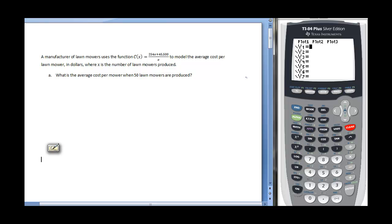This is an application problem using rational functions. Let's figure out what the question is asking. A manufacturer of lawn mowers uses the function C(X) equals 254X plus 45,500 over X to model the average cost per lawn mower, where X is the number of lawn mowers produced. What is the average cost per mower when 50 lawn mowers are produced?